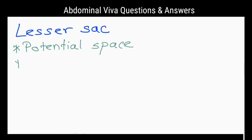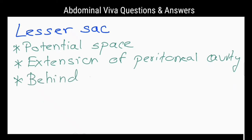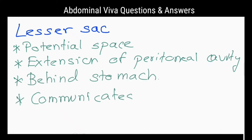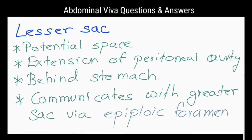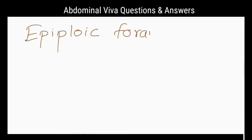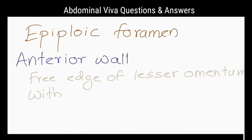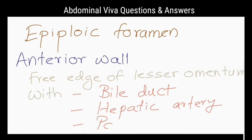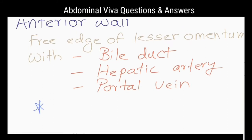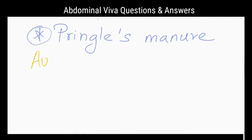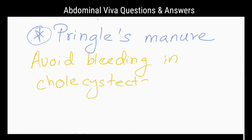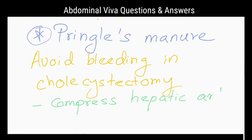What is the lesser sac? It is a potential space formed by an extension of the peritoneal cavity behind the stomach, via which it communicates with the greater sac via the epiploic foramen. What forms the anterior wall of the epiploic foramen? The free edge of the lesser omentum with the bile duct, hepatic artery, and portal vein. What is the importance of knowing this relation? To compress the hepatic artery at the anterior wall of the epiploic foramen to avoid bleeding during cholecystectomy.